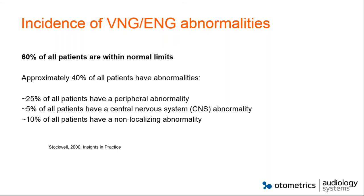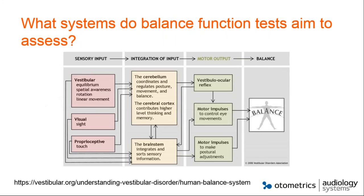Before discussing equipment, let's briefly review the vestibular system. We have three sensory inputs: vestibular, visual, and proprioceptive. All this data goes into the cerebellum and brainstem, which processes the information and produces three compensatory motor outputs: the vestibulo-ocular reflex (VOR), a motor impulse to control eye movements, and a motor impulse to control postural adjustments. We use all these inputs to generate those three outputs to maintain balance and gaze.